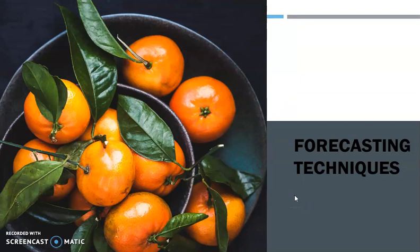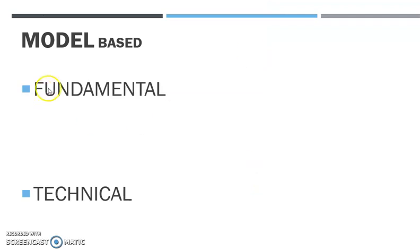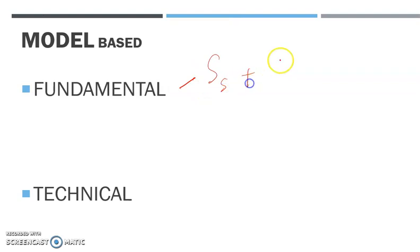Alhamdulillah, we are done with part one on parity conditions. Now we proceed to forecasting techniques. For forecasting techniques, we have two types: model base and market base. Model base has two types — fundamental and technical. Fundamental is based on supply and demand factors that affect the trend of a future exchange rate. The objective is to obtain accurate information for the current future rate, and normally the model we use to forecast is regression and sensitivity analysis, or we can use PPP. Factors affecting supply and demand include inflation, interest rate, and export.